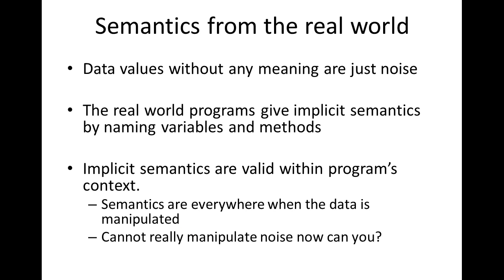So, semantics from the real world. Data values without any meaning are just noise. If you see data that looks like a date-time, it could very well be a date-time, but until you know what the date-time is about you cannot use it in any kind of program logic. In the real world, programs give implicit semantics by naming variables and methods, because implicit semantics are valid within a program's context. Semantics are basically everywhere when data is manipulated.